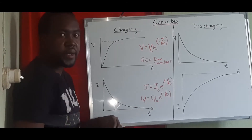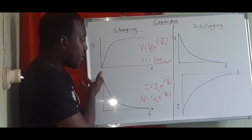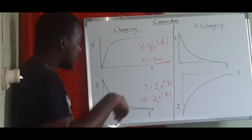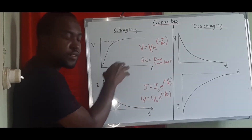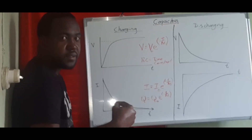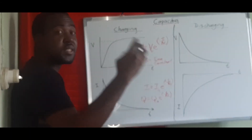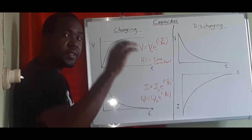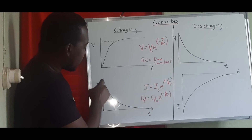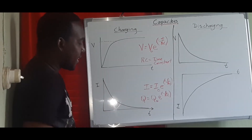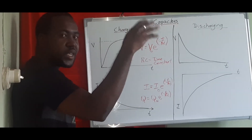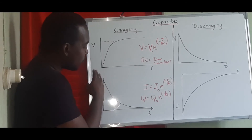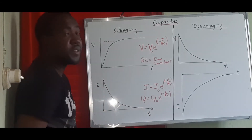For current during charging, it starts from a maximum value because you have no charge stored yet. As you store energy, the flow of current reduces each time until it reaches zero when fully charged — because the resistance effectively gets high once fully charged and no current can pass.